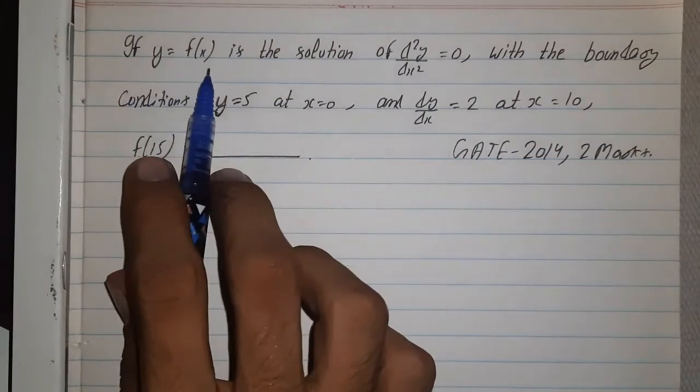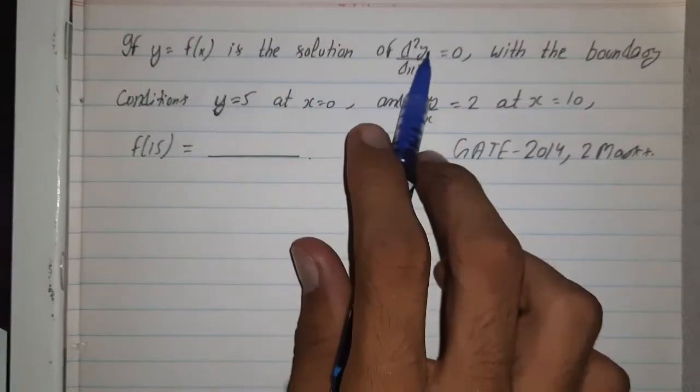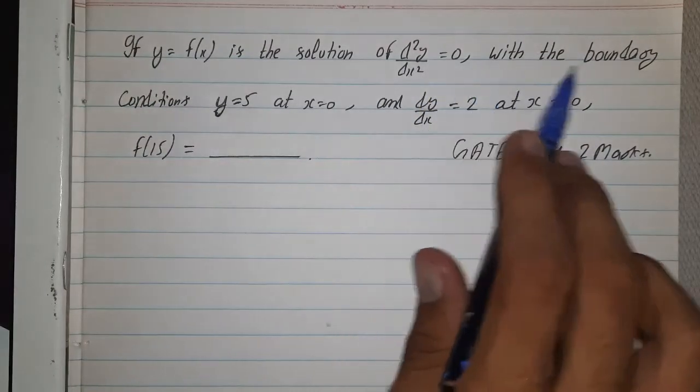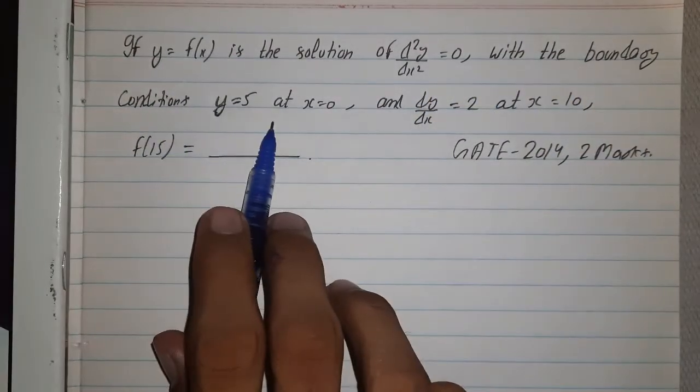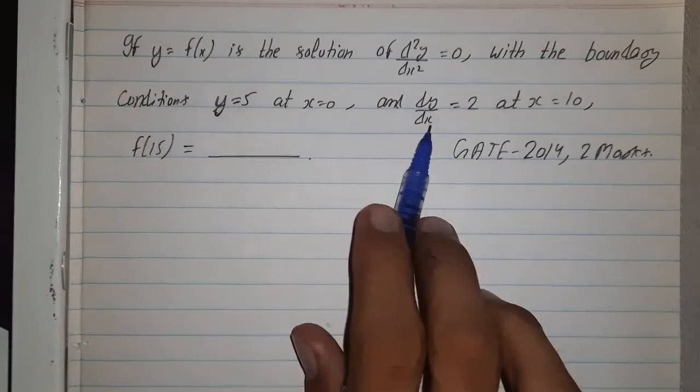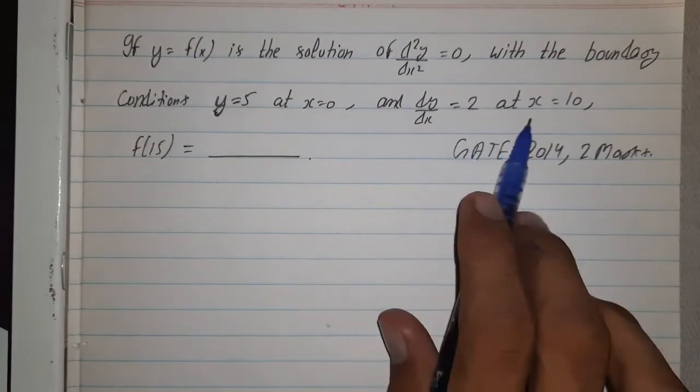If y = f(x) is the solution of d²y/dx² = 0, with the boundary conditions y = 5 at x = 0 and dy/dx = 2 at x = 0.